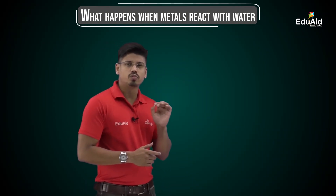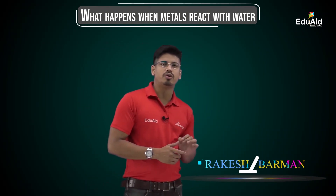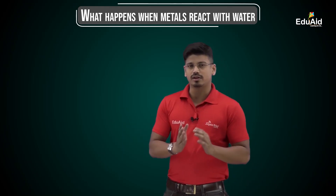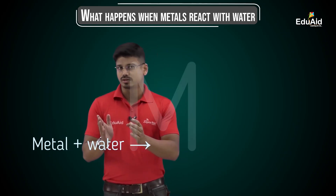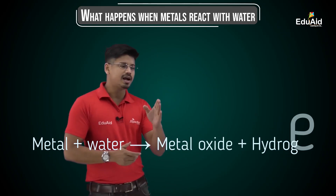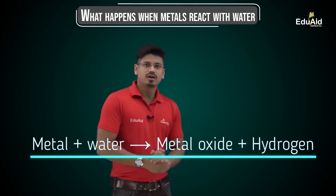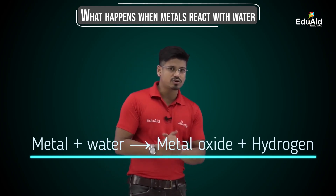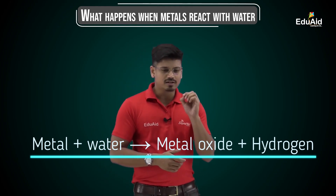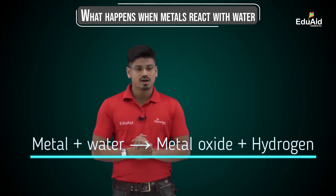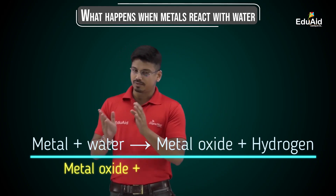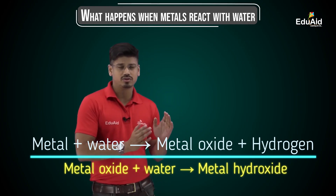The reaction of metals with water depends upon the reactivity of the metals. When a metal reacts with water, it forms metal oxide and hydrogen gas is released. If this metal oxide is soluble in water, then it will further react with water to form metal hydroxide. So: metal oxide + water → metal hydroxide.